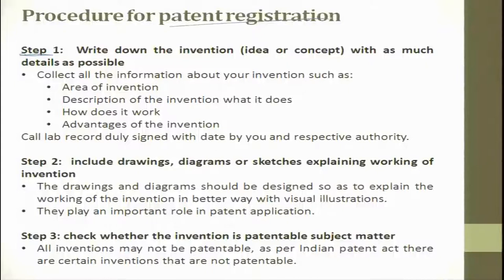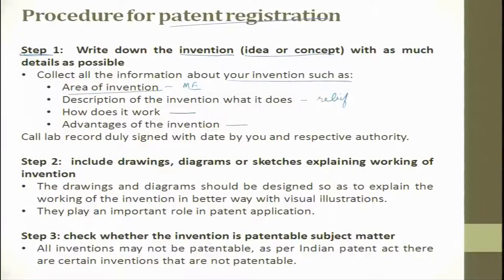When you go for patent registration, there are several steps. Step one is: write down the invention idea or concept with as much detail as possible. Collect all information about your invention, such as the area of invention — for example, mechanical engineering — description of the invention, what it does, how it works, and the advantages of your invention. Then maintain a lab record duly signed with date by you and the relevant authority. It is important because data which is yours is also accessible to a person sitting in China, Japan, or the USA. So start maintaining a lab report or lab sheet.